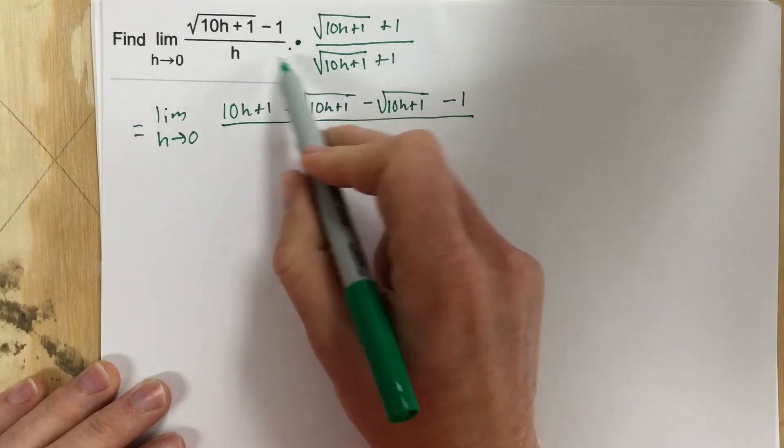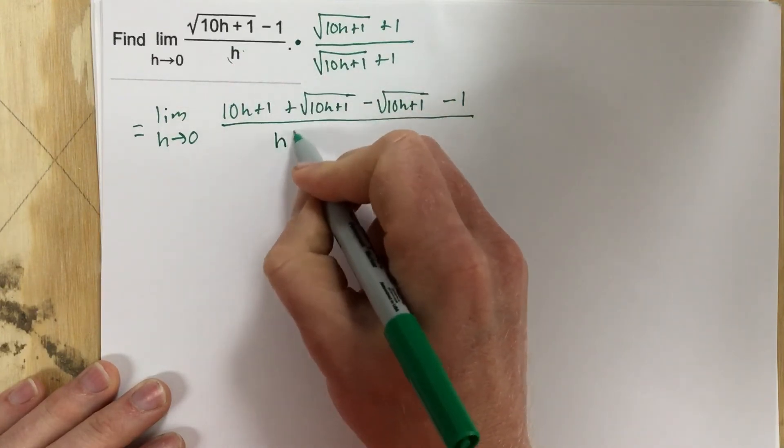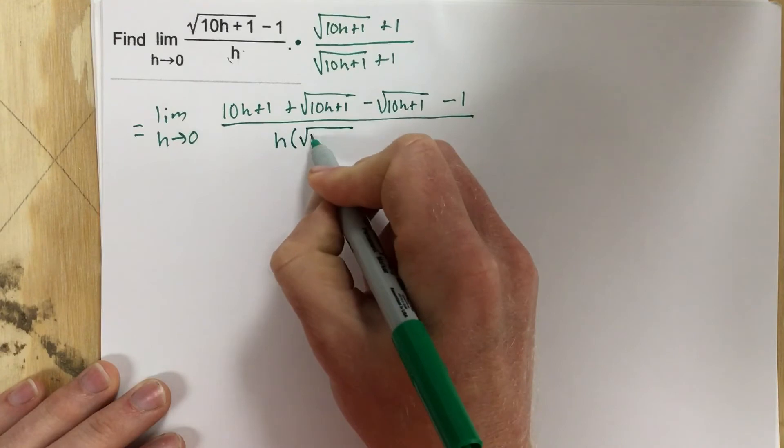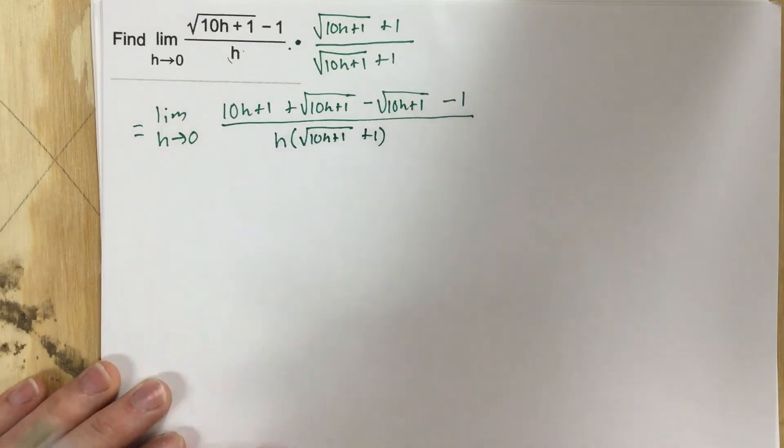On the bottom, I'm not going to distribute this because I'm trying to cancel the h. So I want to just leave that as h root 10h plus 1 plus 1, so I can cancel this if I get a chance.